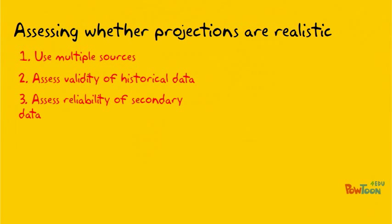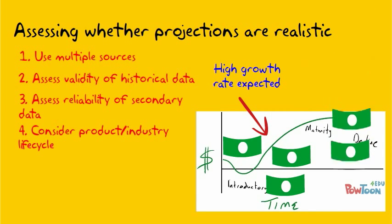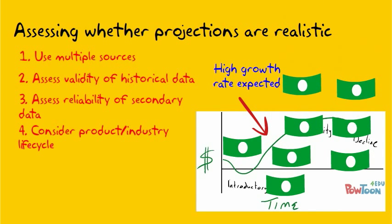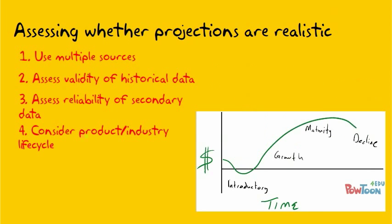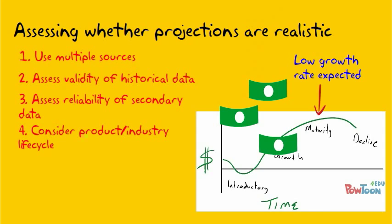Think about what stage of the life cycle your product is in. Products in the growth phase typically see double-digit or even triple-digit growth, so projecting a 20% increase in sales may be reasonable or even pessimistic. But in the maturity phase, average growth rates are maybe 2% to 5%, so a growth rate of 5% may actually be optimistic.